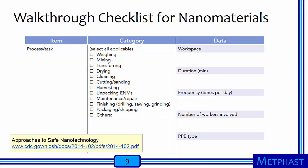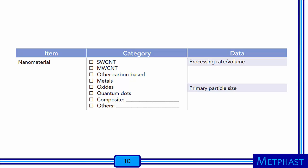On this slide is information that should be collected on processes and tasks in the workplace. As you go through the facility, you should check all processes used. For each process, you should describe the workplace, duration, frequency, number of workers involved, and whether PPE is used. For each nanomaterial, you should note its type, processing rate or volume used, and other characteristics such as its primary particle size.